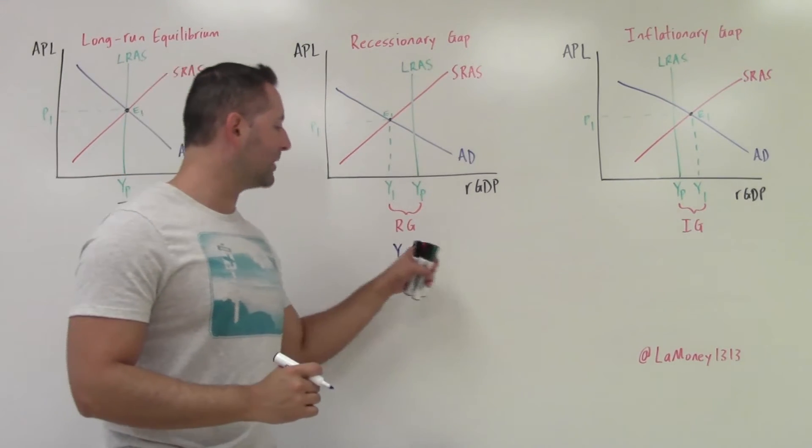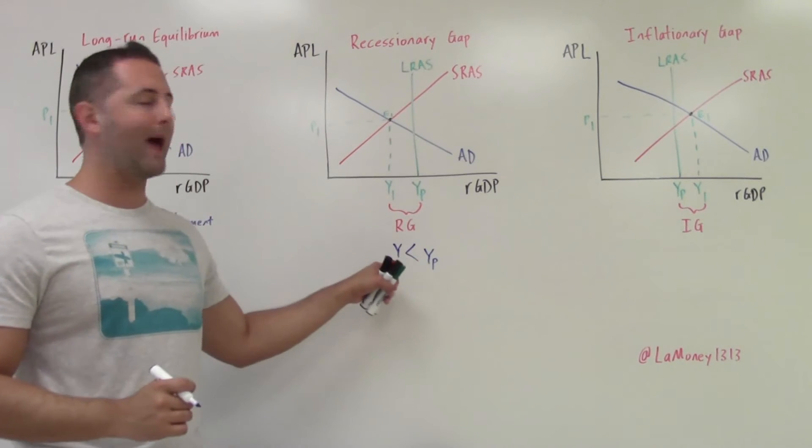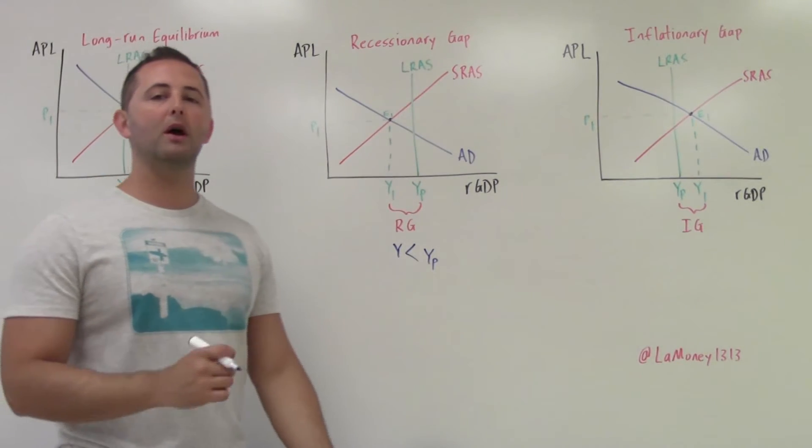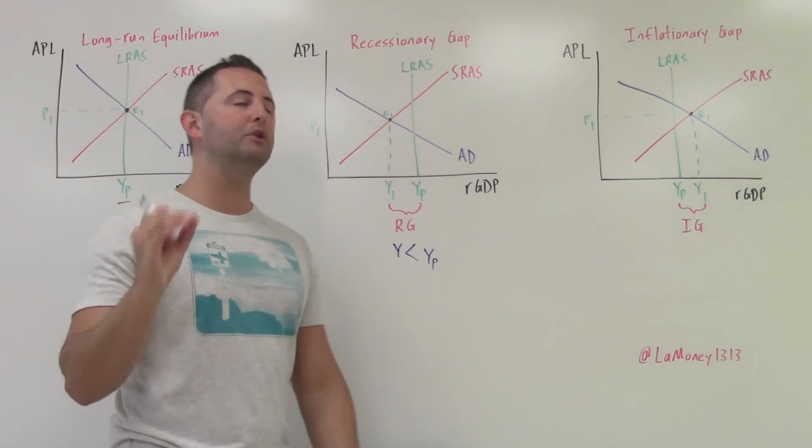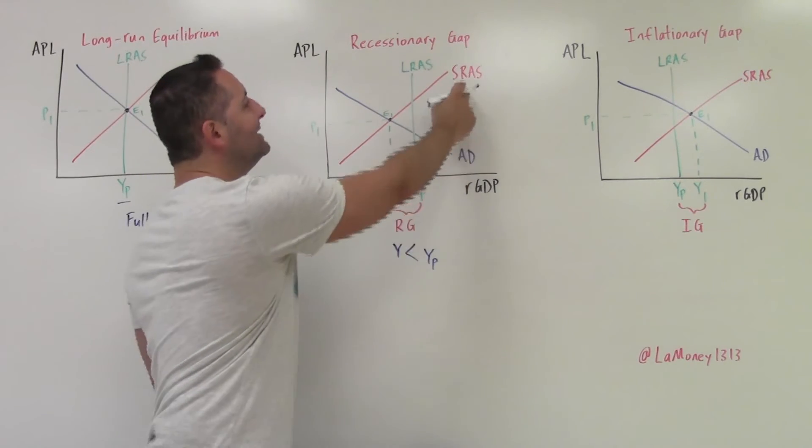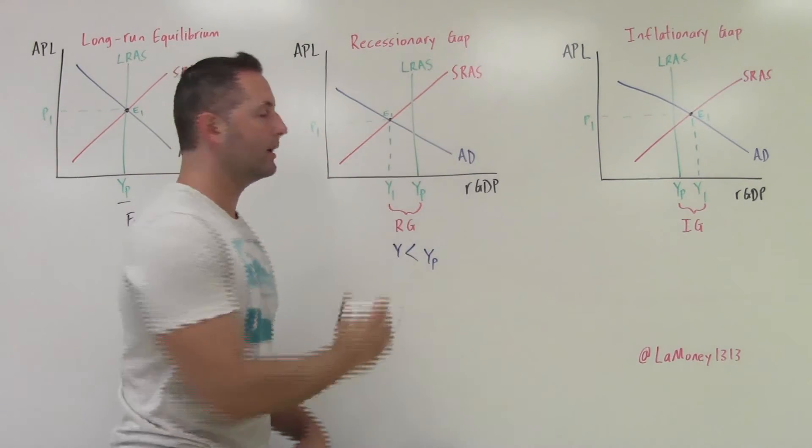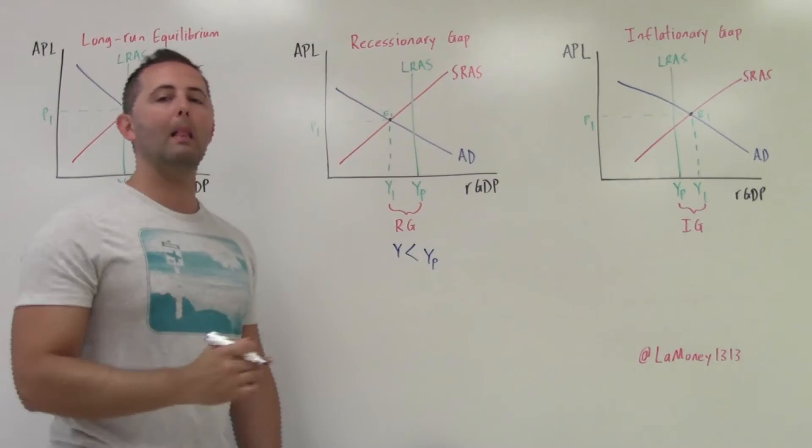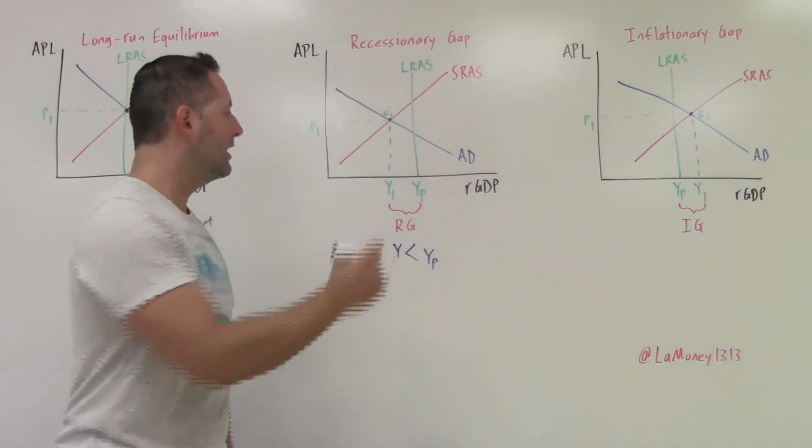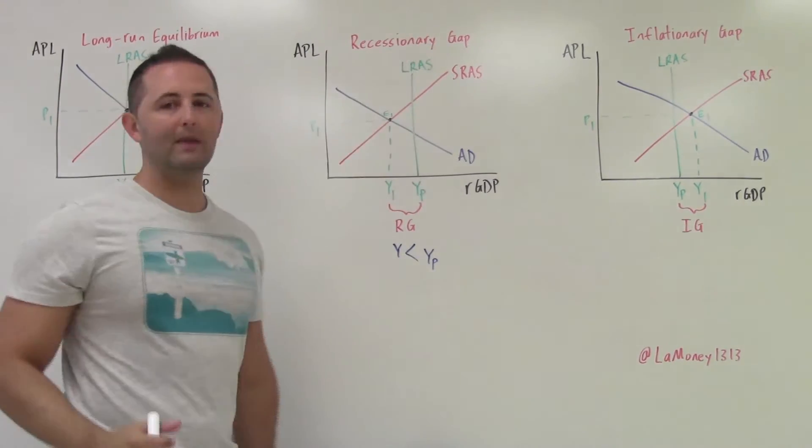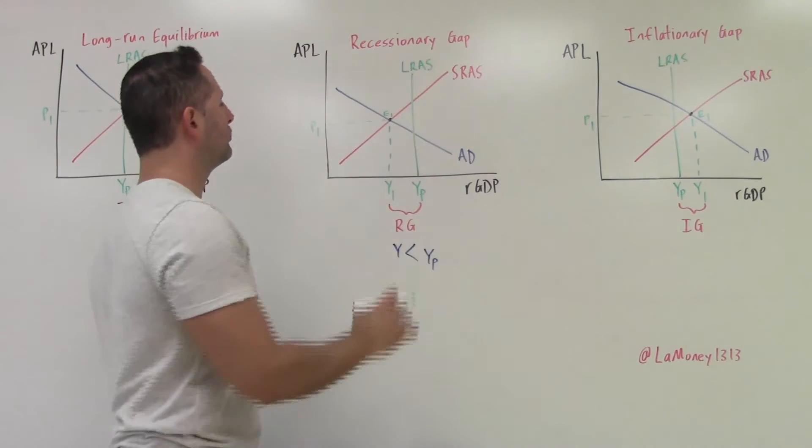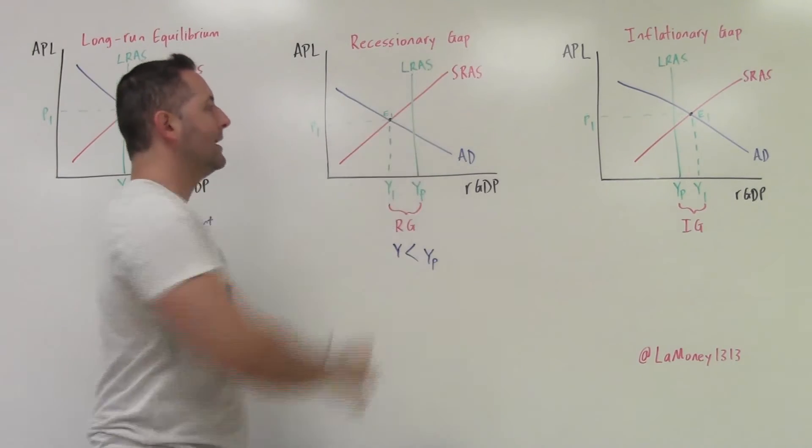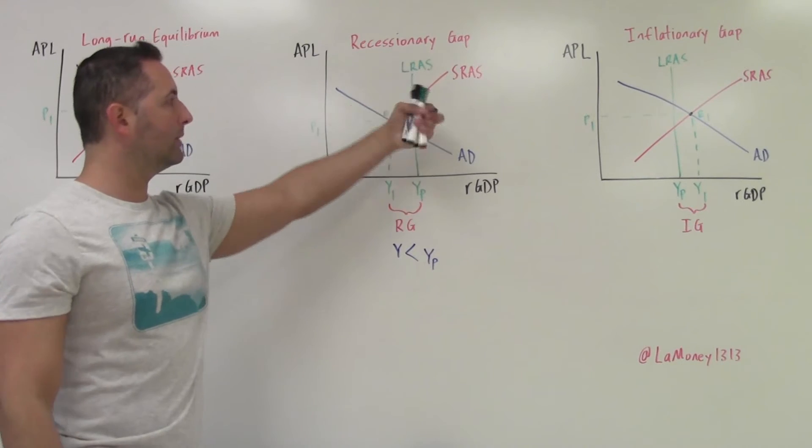And this is our recessionary gap. So that recessionary gap is the difference between potential output and actual output. And so when potential output is greater than actual output, that means that we are in a recessionary gap. So the way that we draw that is simply to have AD and SRAS intersect anywhere to the left of the LRAS curve.